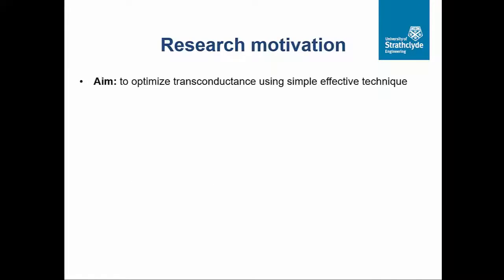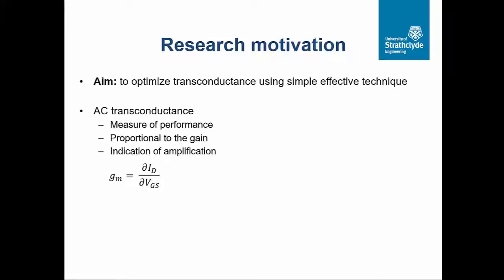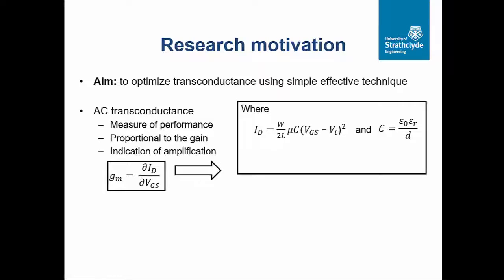So, research motivation. The motivation is to optimize the transconductance using a very simple technique. The transconductance is a measure of the performance of the transistor — usually it's proportional to the gain — and it's expressed as the rate of change of drain current with respect to the change in gate-source voltage. The drain current is given by an equation here as a function of the channel width and length, the mobility, the gate capacitance, the gate-source voltage, and threshold voltage. We also have the equations of capacitance and transconductance. So, in order to increase the transconductance, we can use some of the parameters shown here.